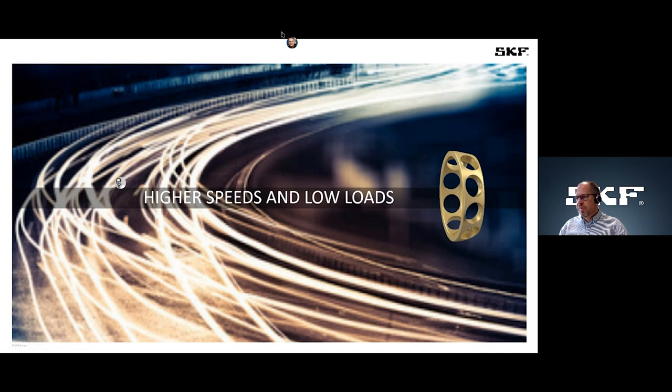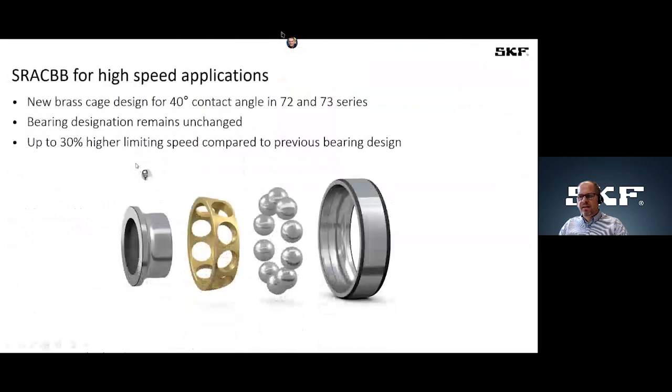Another new bearing what we have launched some years ago is a bearing with 40 degree contact angle. So it's the standard design so to say, but we have equipped this bearing with a new brass cage. And this brass cage gives a lot of additional speed ability to this bearing. The designation itself is unchanged, but the customer gets the same bearing with a 30 percent higher limiting speed ability.